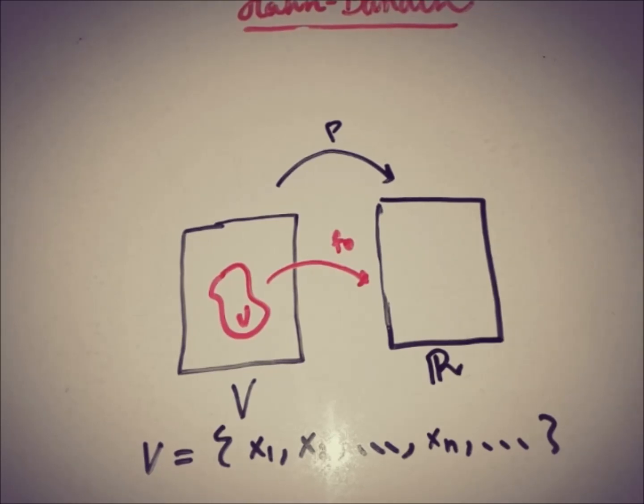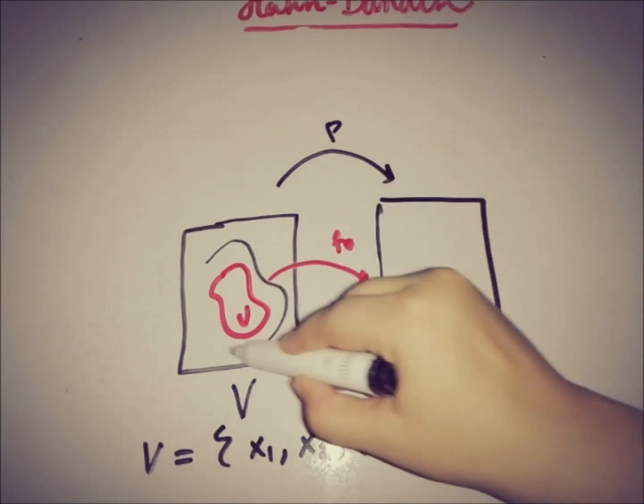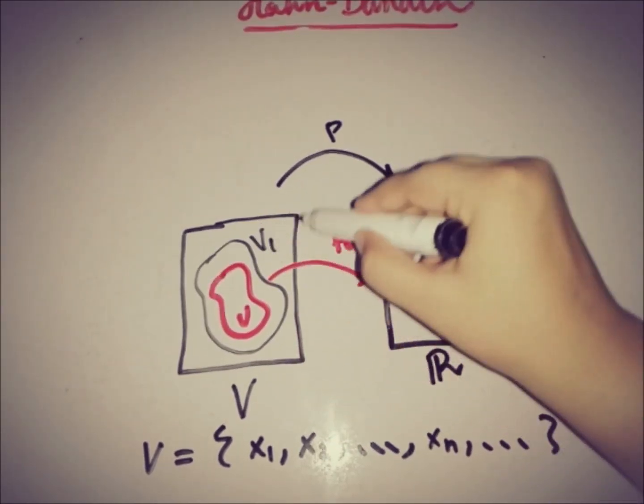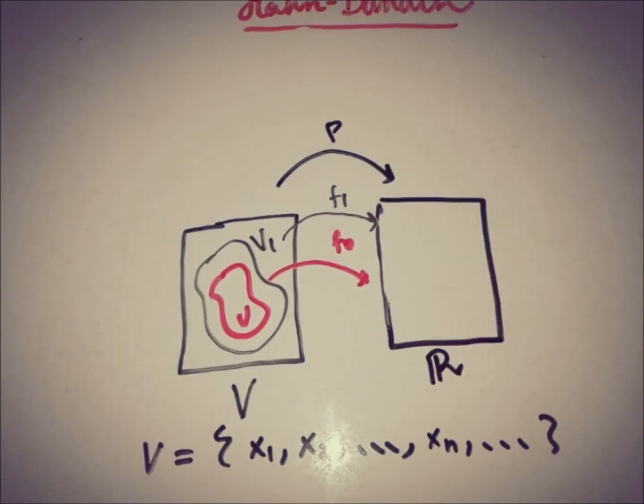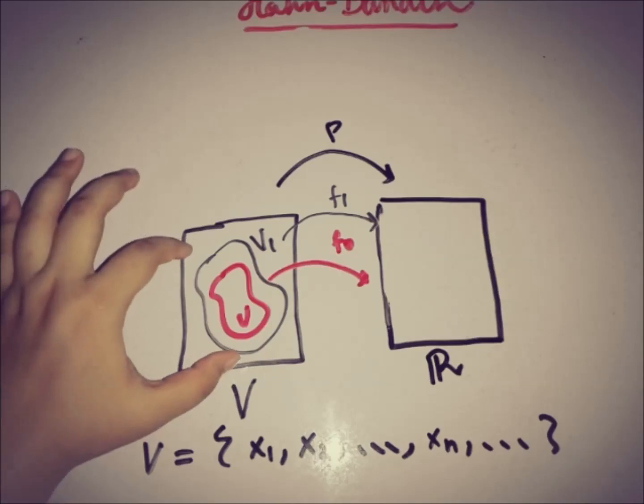In the previous video, we have seen that we formed a space v1 that has a functional f1 that doesn't violate the condition of linearity as well as the extension or the majorization condition.